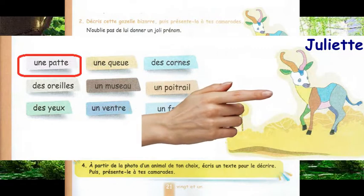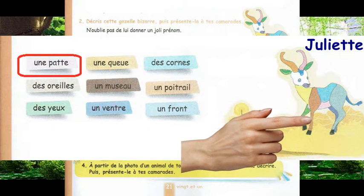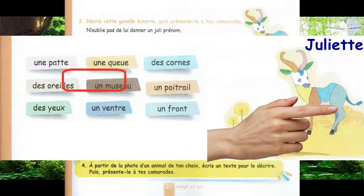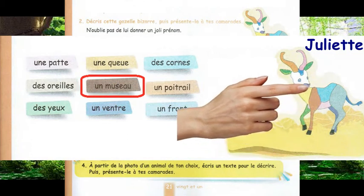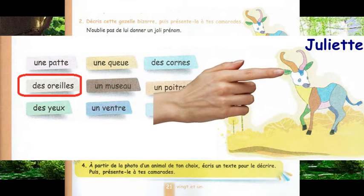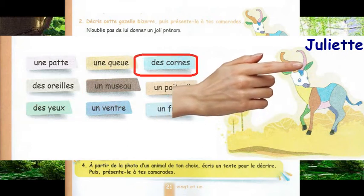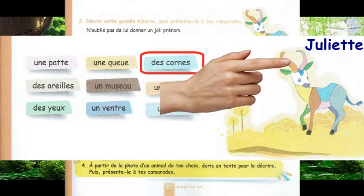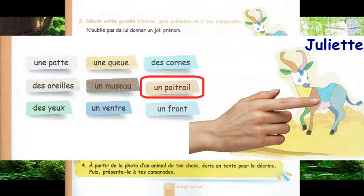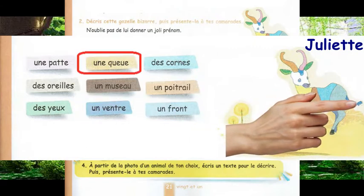Ses pattes sont de couleur verte, marron, bleu et violette. Elle a un museau, un front, des oreilles vertes, des yeux bleus. Elle a aussi des cornes colorées en rose et rouge, un poitrail jaune, un ventre rose et une queue bleue. C'est une gazelle très bizarre.